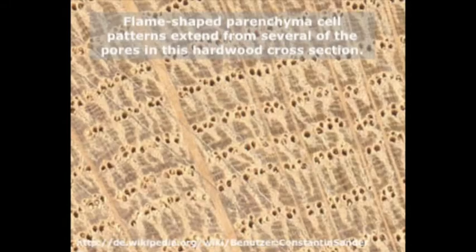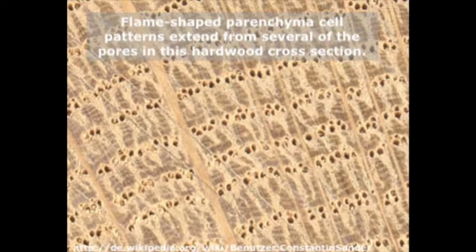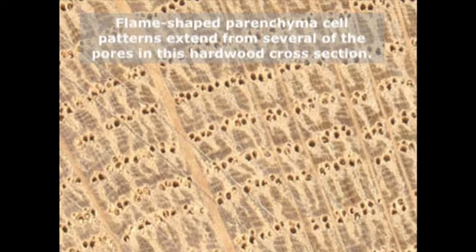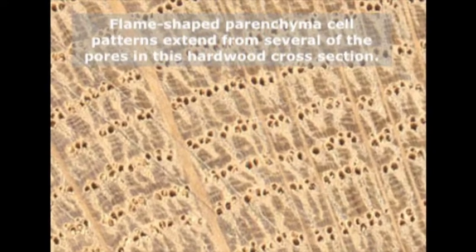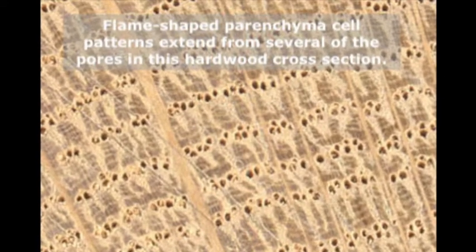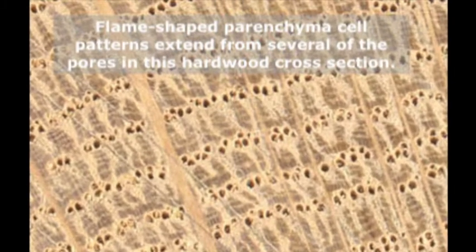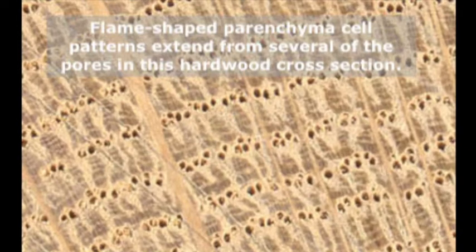In addition, there are many different types of parenchyma cells in hardwoods. The rays in hardwoods are composed completely of parenchyma cells, but parenchyma cells can also be distributed throughout the wood. As an example, parenchyma cells often form patterns surrounding the vessels in some hardwood species, and these patterns can help in the identification of some hardwoods.